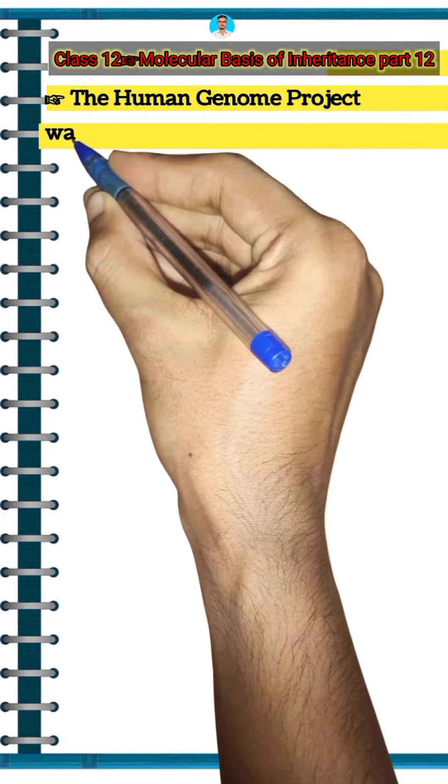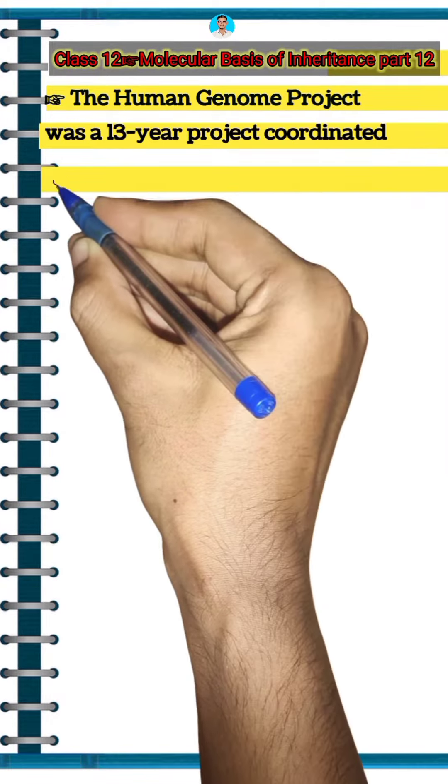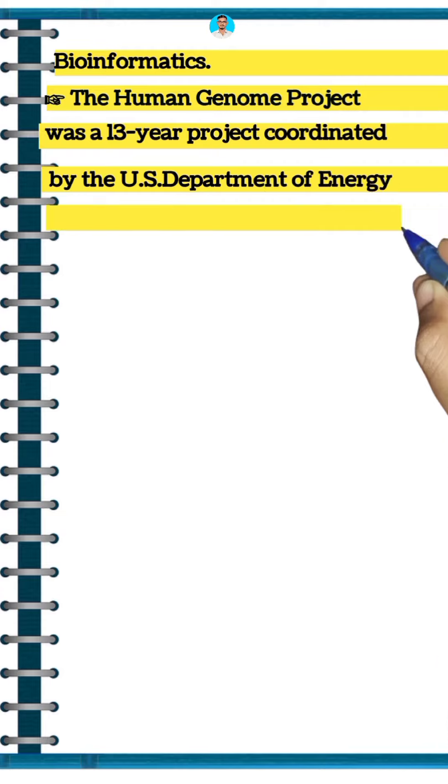The Human Genome Project was a 13-year project coordinated by the U.S. Department of Energy and the National Institute of Health.